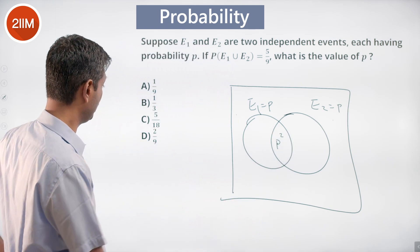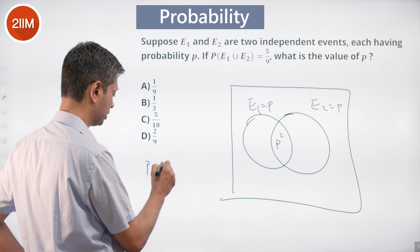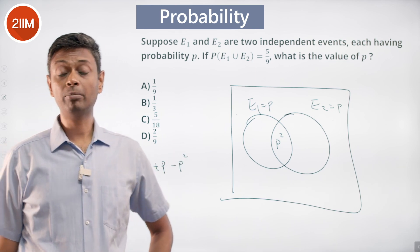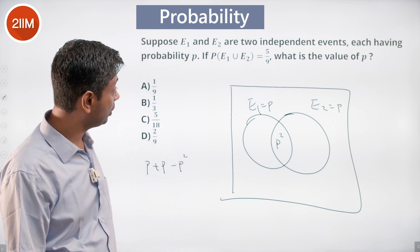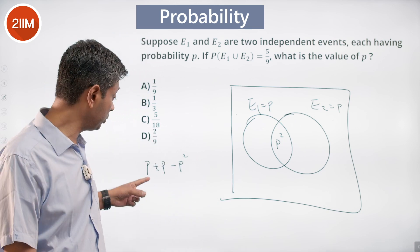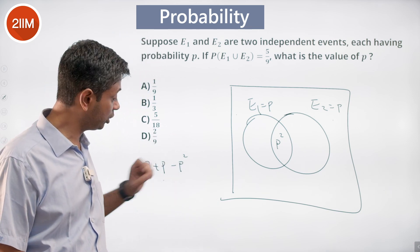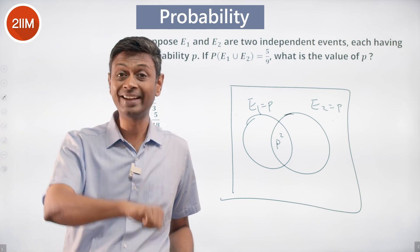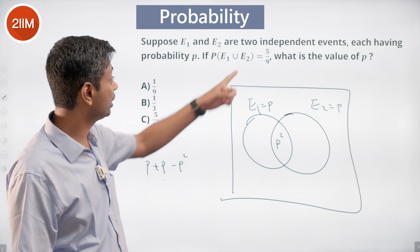Probability of e1 union e2 is p plus p minus p square. A union b is a plus b minus a intersection b. Probability of e1 union e2 is probability of e1 plus probability of e2 minus probability of e1 intersection e2. E1 intersection e2 is nothing but probability of e1 into probability of e2. Why? We told there are independent events.